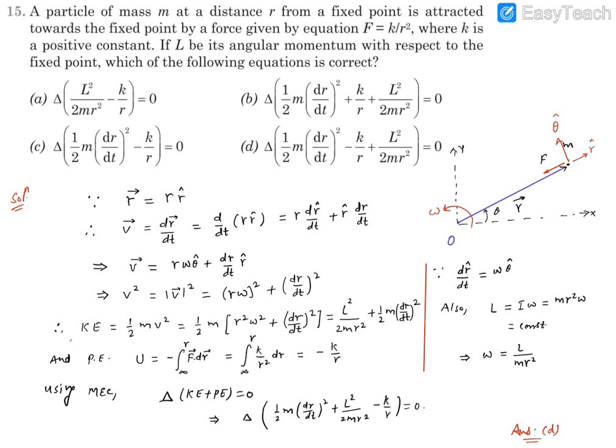If we write the total kinetic energy, that's going to be half mv square. V square is this number. So it comes out to be half m r square omega square plus half m dr by dt whole square.